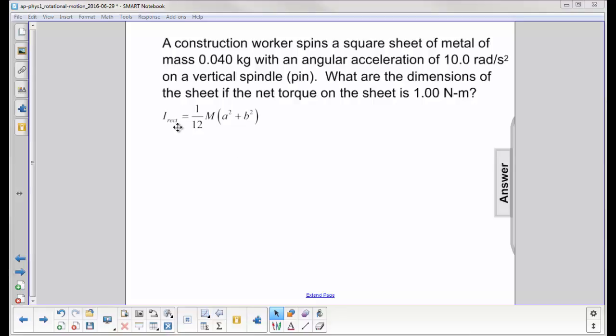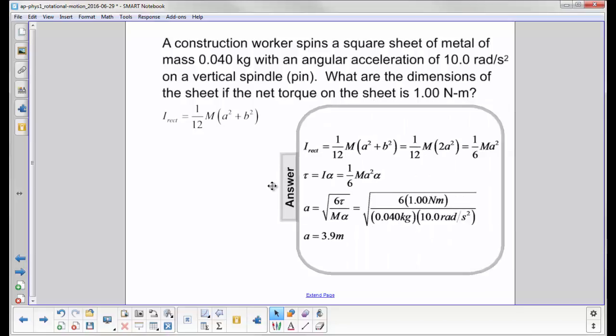Now the moment of inertia for a rectangle is 1/12 m(a² + b²) where a and b are either side of the rectangle. Since we're dealing with a square, that will simplify somewhat.